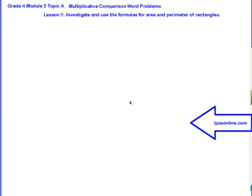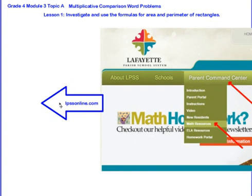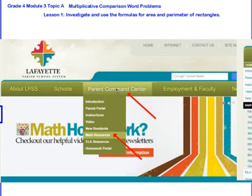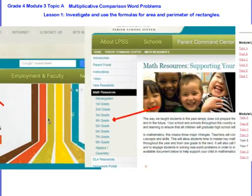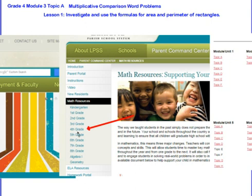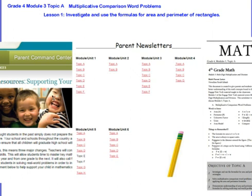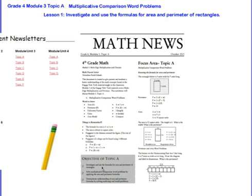So that's it for lesson one. I want you to remember that you can always go to lpssonline.com to get some additional resources. You hover over the word Parent Command Center. You go down to Math Resources and click there. Then you click the grade level you want. In this case, we want fourth grade. And then you'll get this page that shows the different topic newsletters. We're on Module 3 and we're working with Topic A. So when you click this, you will get a newsletter like this one that can really help you with the vocabulary and the strategies that we use in this module. Thanks.